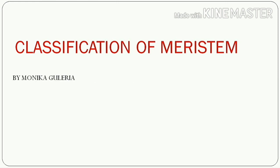In our last lecture, we started our discussion with the classification of meristem. The first type of classification was based on position in the plant body, and depending upon the position, we classified meristem into three categories: apical meristem, intercalary meristem, and lateral meristem.